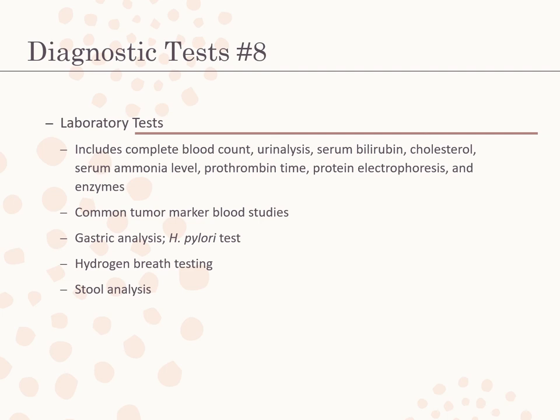Helicobacter pylori, a type of bacteria, is believed responsible for the majority of peptic ulcers. Gastric mucosal specimens obtained during endoscopy are cultured for H. pylori. Blood tests determine whether there are antibodies to H. pylori in the blood. Urea breath tests also detect active H. pylori infection: the client drinks a urea solution or swallows a urea capsule. If H. pylori bacteria are present, they break down the urea, releasing carbon which is exhaled and analyzed. During and after therapy, the H. pylori stool antigen (HPSA) test determines effectiveness of treatment.